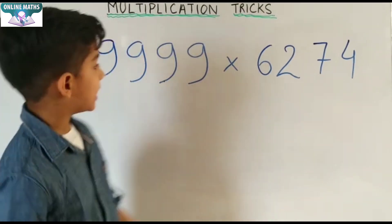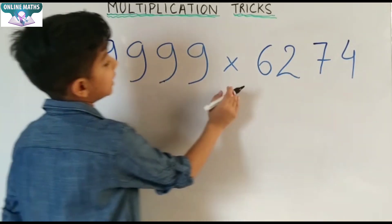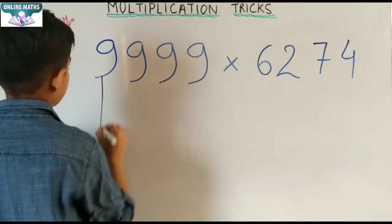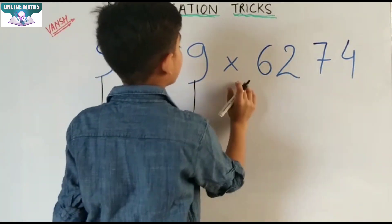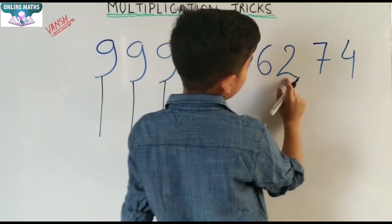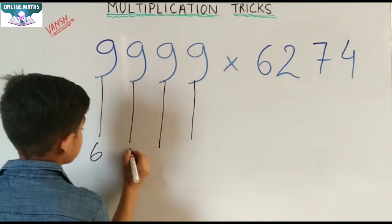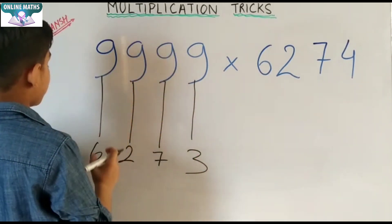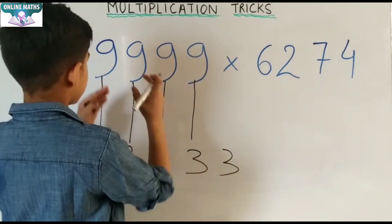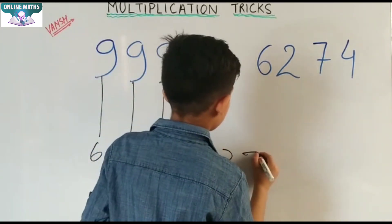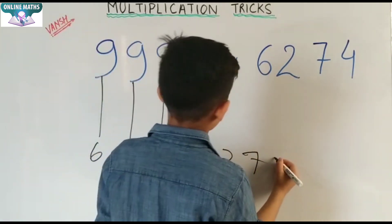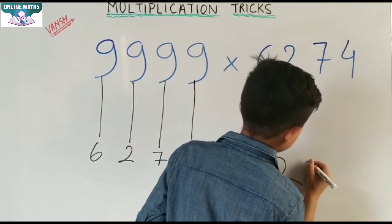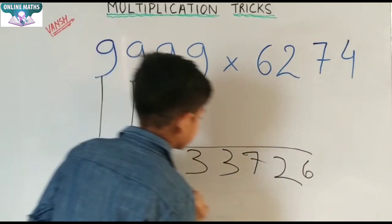Our last example is 9999 multiply by 6274. One less number of 6274 is 6273. 9 minus 6 is 3, 9 minus 2 is 7, 9 minus 7 is 2, 9 minus 3 is 6. Our answer is this.